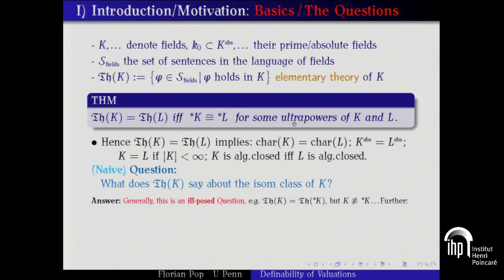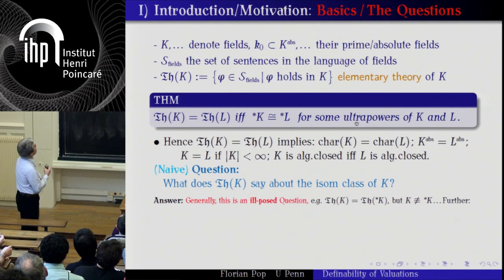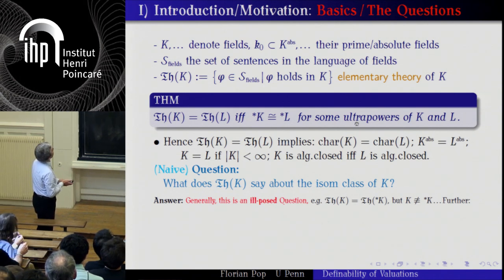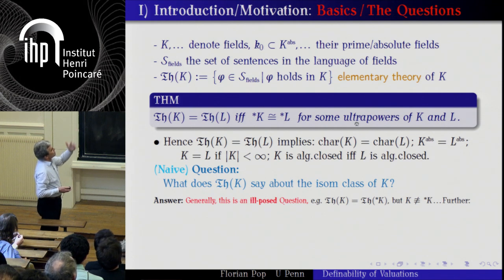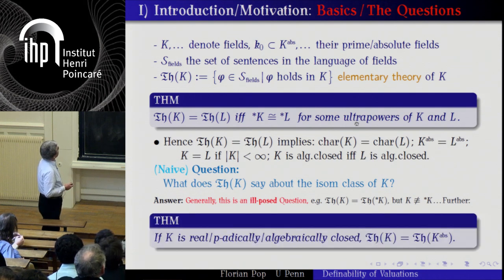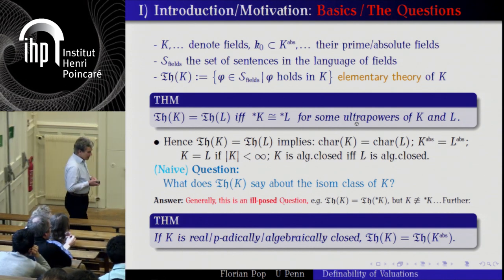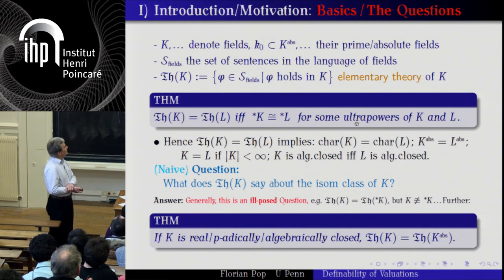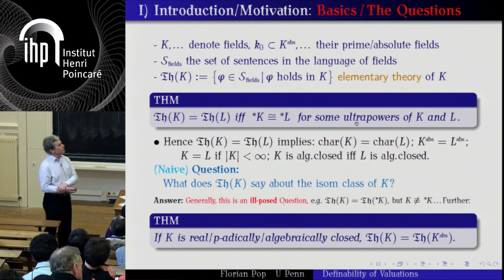I learned from my advisor Peter Roquette that Artin, after they invented the machinery of real closed fields, tried a lot to classify real closed fields up to isomorphism. As we know, the problem was not done and cannot be done. Maybe the simplest example why this is ill-posed: when K is infinite, the theory of K and K* (any ultrapower) is always the same, and they are far from being isomorphic. Moreover, if K is real or p-adically closed or algebraically closed, then the theory is simply the theory of the absolute field.